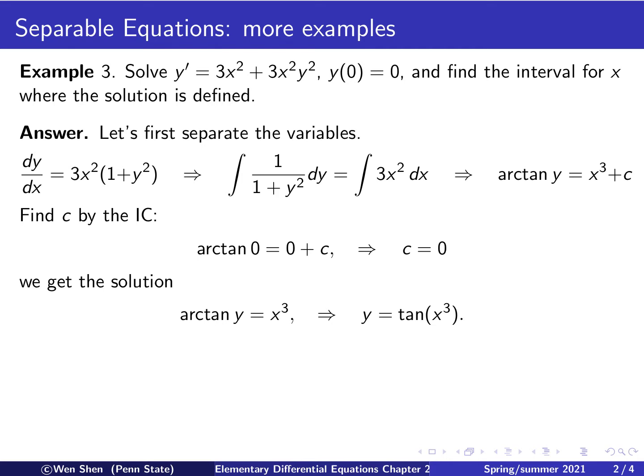And then we see that we are in a fortunate situation. That is, if we take the tan of y on both sides, the tan and arctan are inverse functions, and we get rid of that. So this gives us y is the tan of x cubed. So for this example, we managed to get an explicit solution.